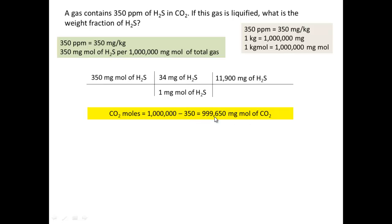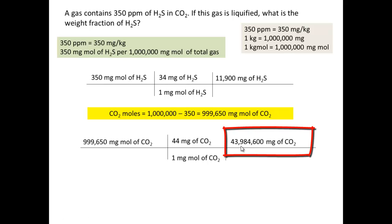Then we have 999,650 mgmol of CO2. Now we can convert this value to mass. Like the first equation, 1 mgmol of CO2 is 44 mg of CO2. This is the molecular weight of CO2. Oxygen is 16 multiplied by 2 is 32, plus 12 from carbon. Multiplying these two values, we have 43,984,600 mg of CO2.